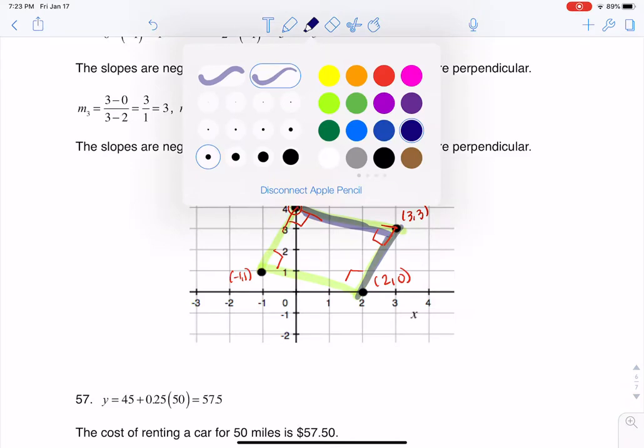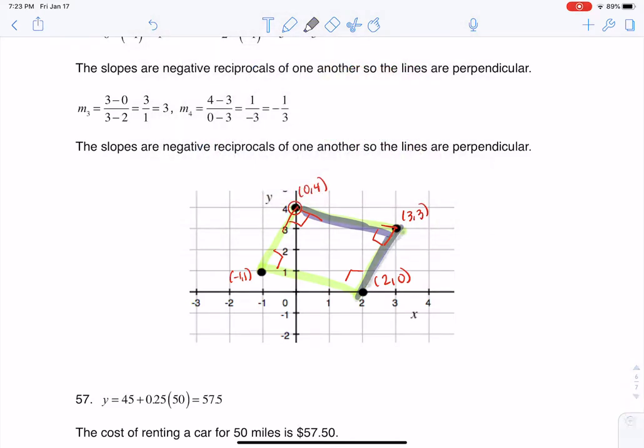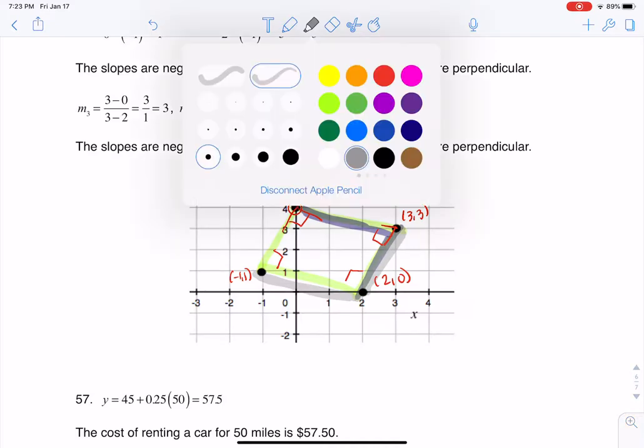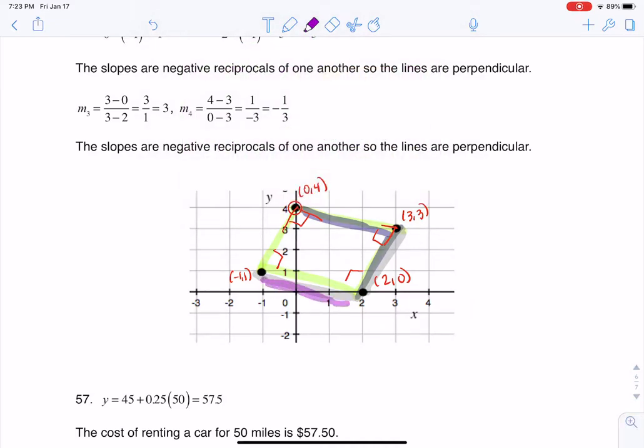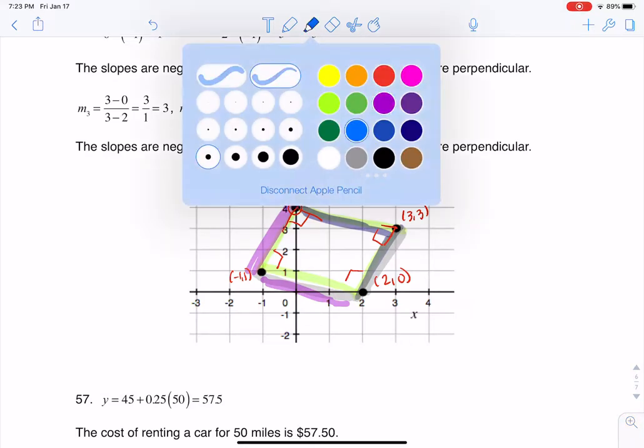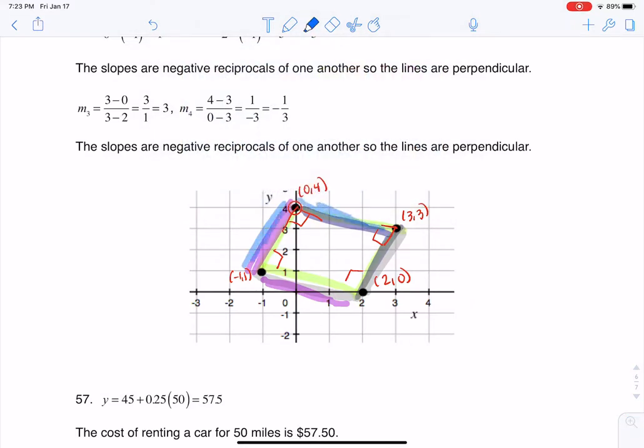I also want to find the slope between these two points and these two points, and that slope should be perpendicular. And then I also want to find the slope between these two points and these two points, and that slope should be perpendicular. And last but not least we want to go here and here, and that should be perpendicular.